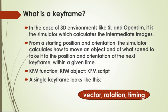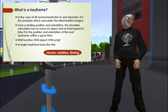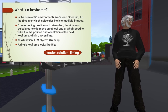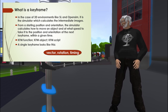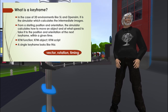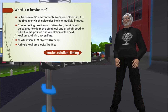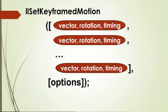Today I will use the abbreviation 'keyfm' a lot — referring to the keyfm function, the keyfm object, or keyfm script. A single keyframe looks like this at the bottom of the screen. It's a triplet of three values: a position vector, a rotation which is the orientation of the object, and a timing. When we call the function in a script, its name is set keyframe motion.